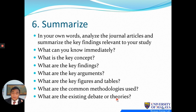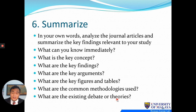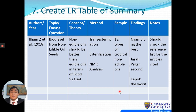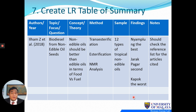The next step is to summarize. In your own words, analyze the journal articles and summarize key findings relevant to your study: what are the key findings, key figures and tables, common methodologies used? When you review many articles you can see similarities and trends. I also encourage you to create a literature review table of summary listing authors, topic, concept, theory, methods, sample, findings, and notes — so you can compare articles easily and monitor everything you have downloaded and read.